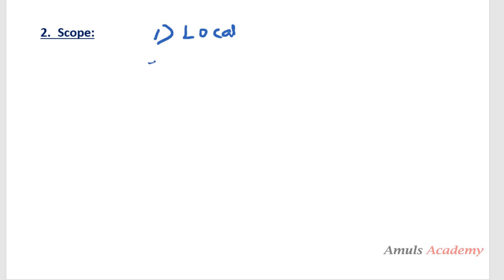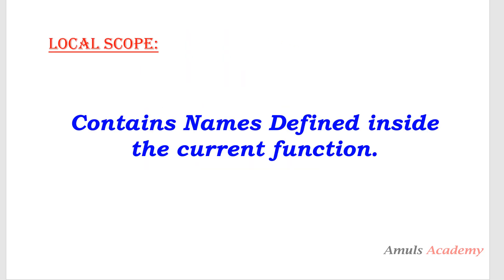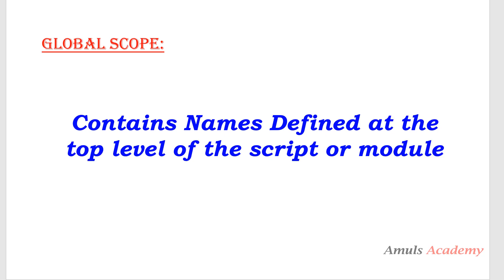The four types are: first is local, second is global, third is enclosed, and fourth is built-in. Local scope contains names defined inside the current function. If we define any variable inside a function, the scope of that variable is inside that function; when the function ends, the availability of the variable also ends. Global scope contains names defined at the top level of the module or the beginning of the script, and these names are available for the whole script. The lifetime ends when the program ends.